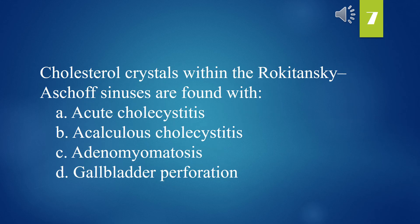Cholesterol crystals within the Rokitansky-Aschoff sinuses are found with: A. Acute cholecystitis. B. Acalculus cholecystitis. C. Adenomyomatosis. D. Gallbladder perforation. The answer is C. Adenomyomatosis.